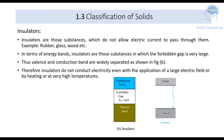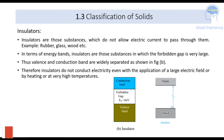In terms of energy band, insulators are substances in which the forbidden gap is very large, so the valence and conduction bands are widely separated. In this figure you can see the valence band and conduction band — the conduction band will be empty and the valence band will be fully filled. The forbidden energy gap is very large, equal to 6 electron volts. Therefore, insulators do not conduct electricity even with the application of a large electric field, by heating, or at any high temperatures.